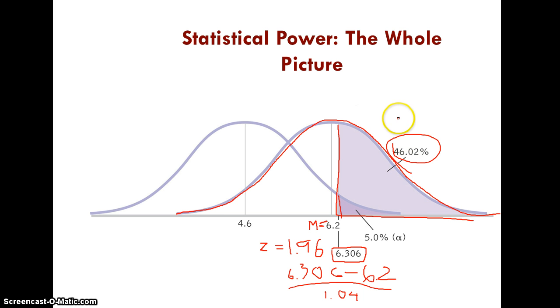This is not very impressive for statistical power. Generally, we want statistical power to be somewhere around 0.80%. Which means that we want to make the correct decision 80% of the time. It means that we're okay with committing a type 2 error 20% of the time.